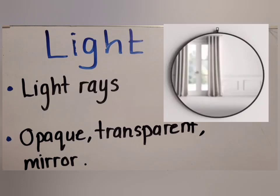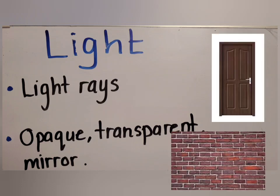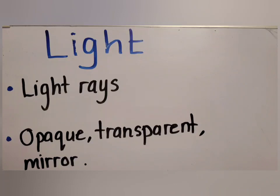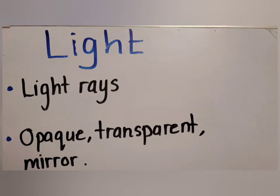Last but not least, mirror objects have a special effect — when light rays come to them, they reflect the light. As we said, when something starts with 're,' it means going back or happening again. So 'reflect' means the light ray goes back, and that's why when we stand in front of a mirror we can see ourselves. To summarize: opaque objects block light, such as doors and walls; transparent objects allow light to pass, such as glasses, windows, and a glass cup; and mirror objects reflect the light.